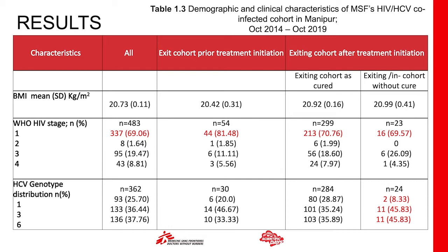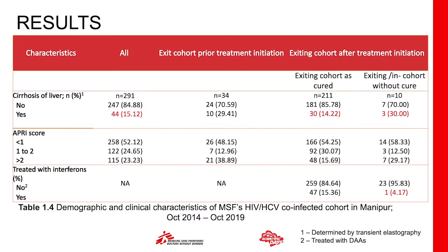Exiting the cohort without a cured status could include treatment failure, loss to follow-up, or death. Liver cirrhosis was present in about 15% of the entire cohort, and 30% of patients who exited without cure had cirrhosis. However, formal testing of the association between liver status and treatment outcome in a regression model is still needed. Treatment with interferon also did not have a higher frequency of failure compared to DAAs.